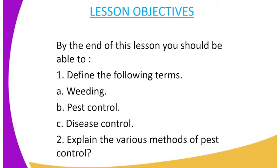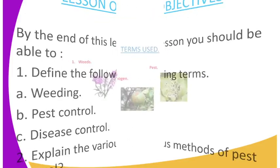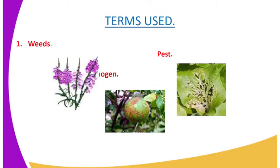Onto the lesson objectives: by the end of this lesson you should be able to define the following terms — number one, weeding; number two, pest control; and number three, disease control. You are also supposed to explain the various methods of pest control.